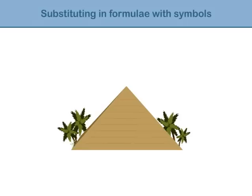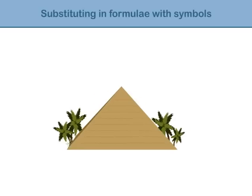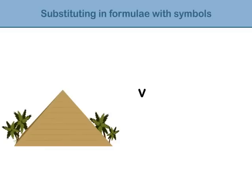We write this as v equals a times h divided by 3. If the area of the base is 100 square metres and its height is 25 metres, then what is the volume?